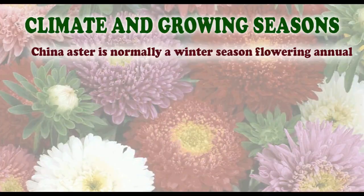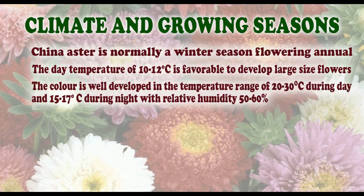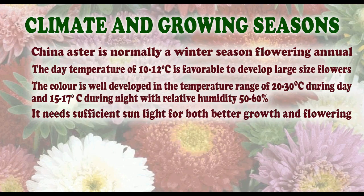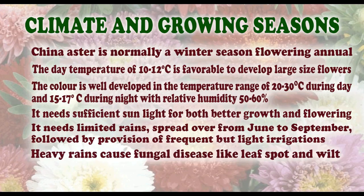China Aster is normally a winter season flowering annual. A day temperature of 10 to 12 degrees Celsius is favorable to develop large size flowers. The color is well developed in the temperature range of 20 to 30 degrees Celsius during the day and 15 to 17 degrees Celsius during night, with relative humidity of 50 to 60 percent. It needs sufficient sunlight for both better growth and flowering. It needs limited rains spread over from June to September, followed by frequent but light irrigation. Heavy rains cause fungal diseases like leaf spot and wilt.